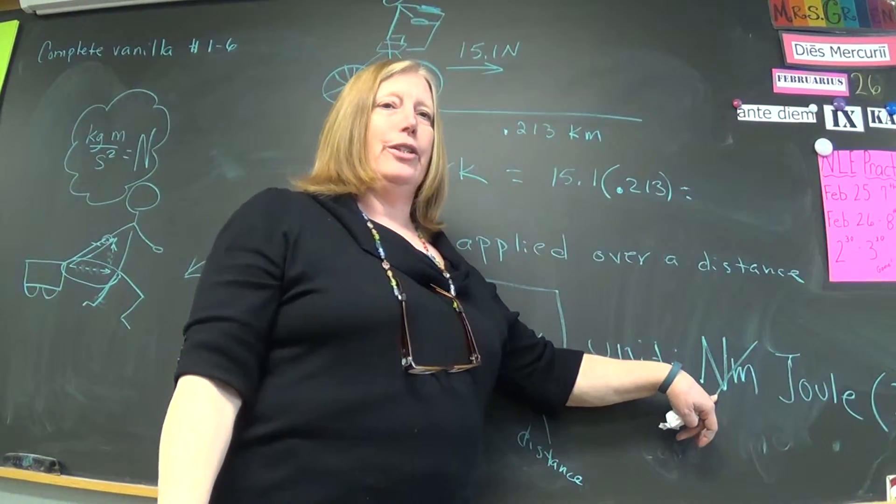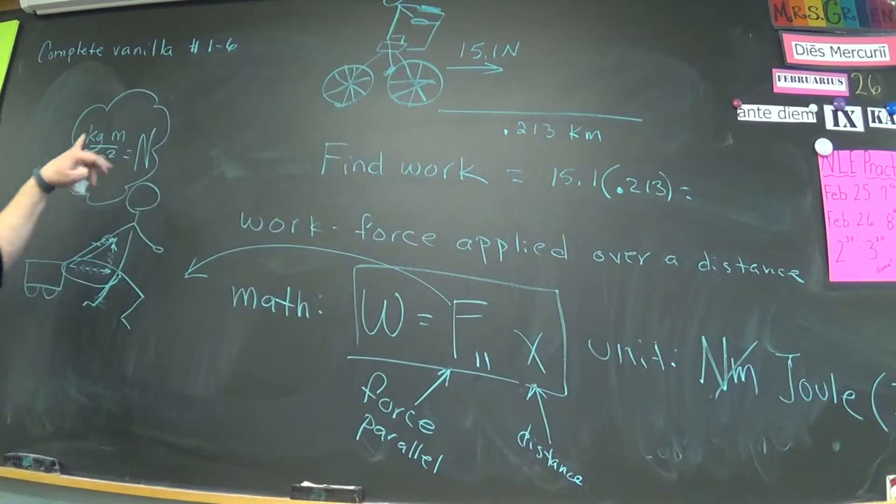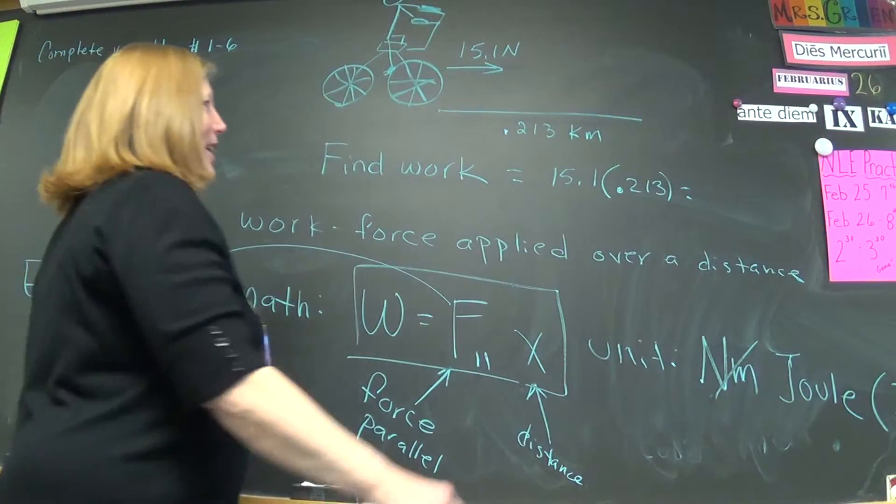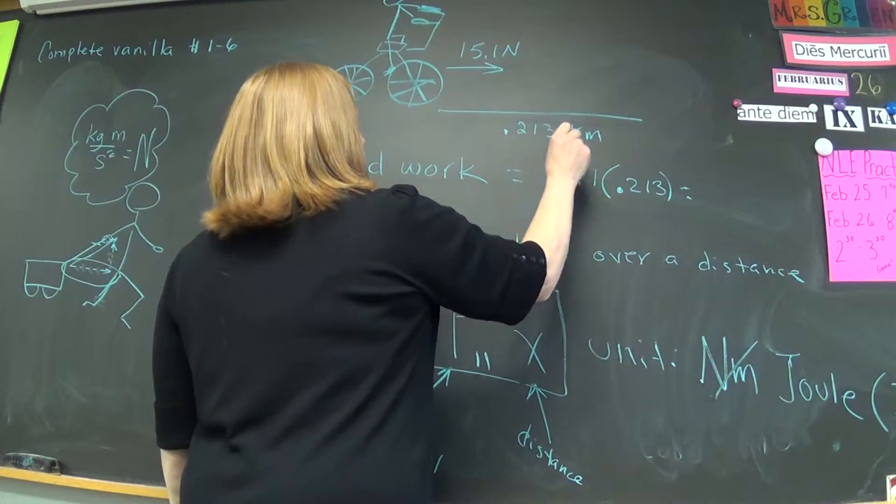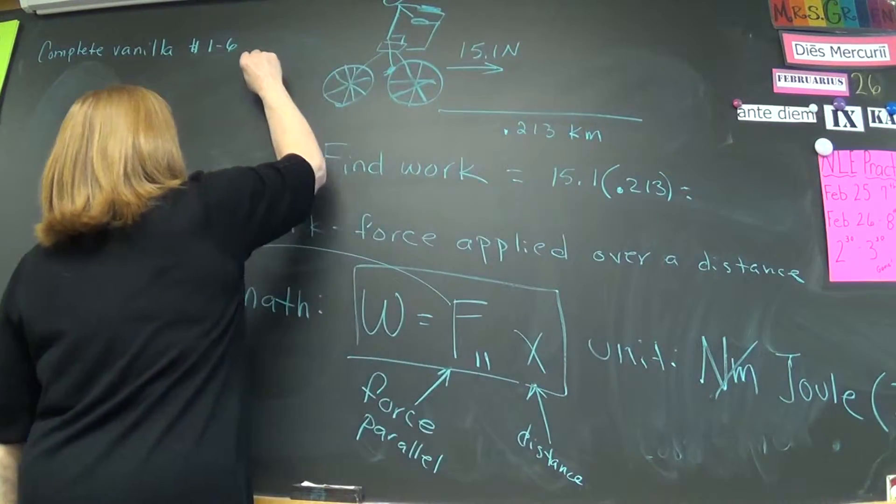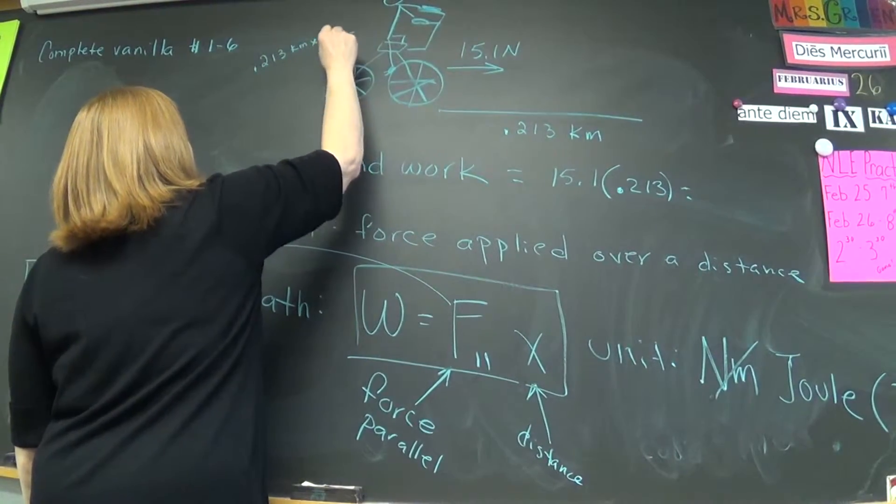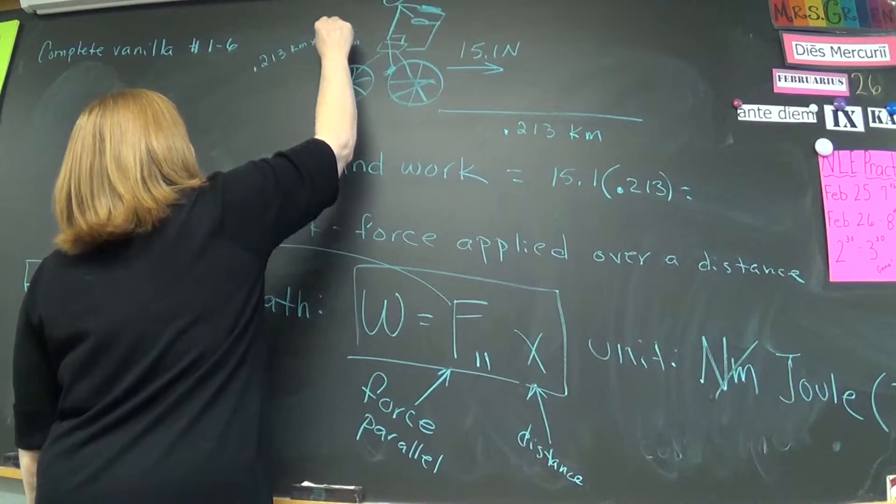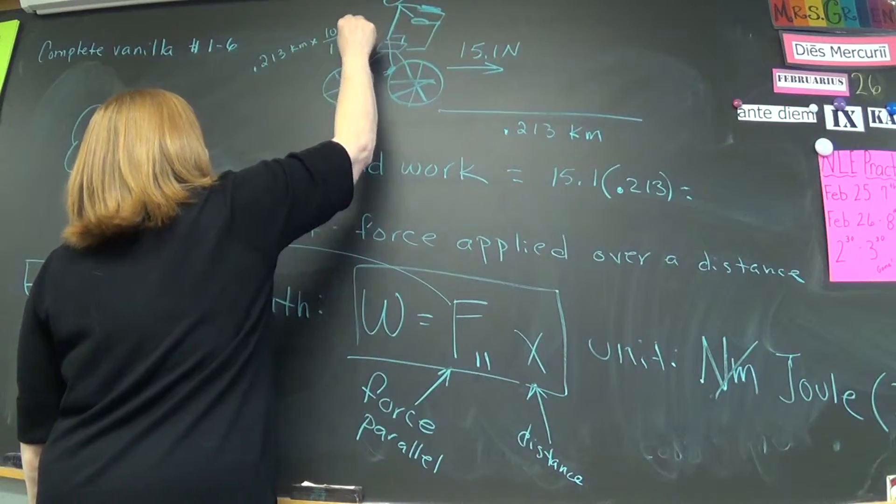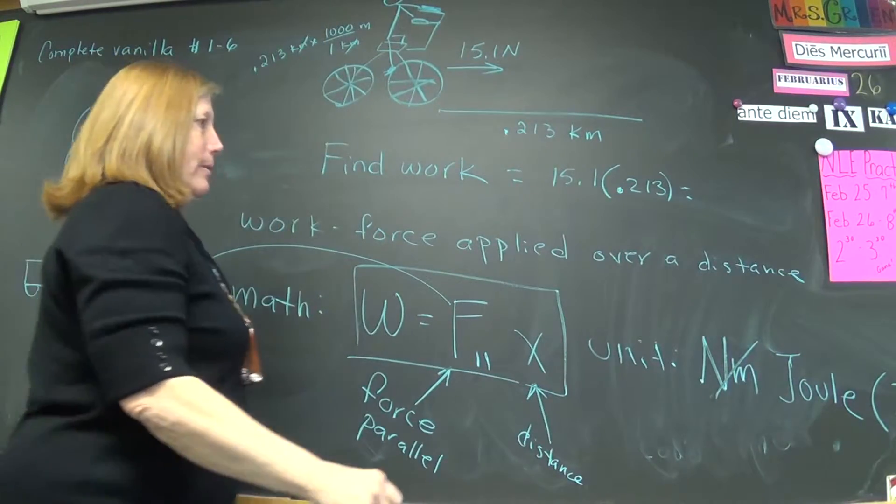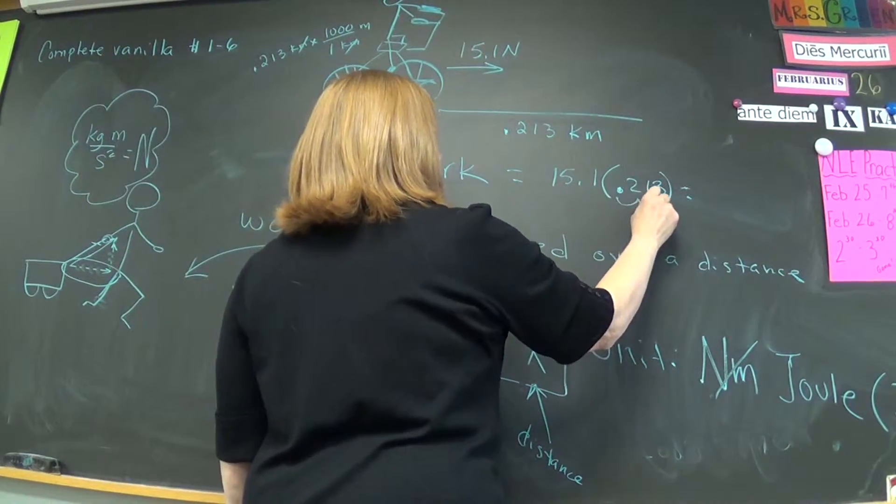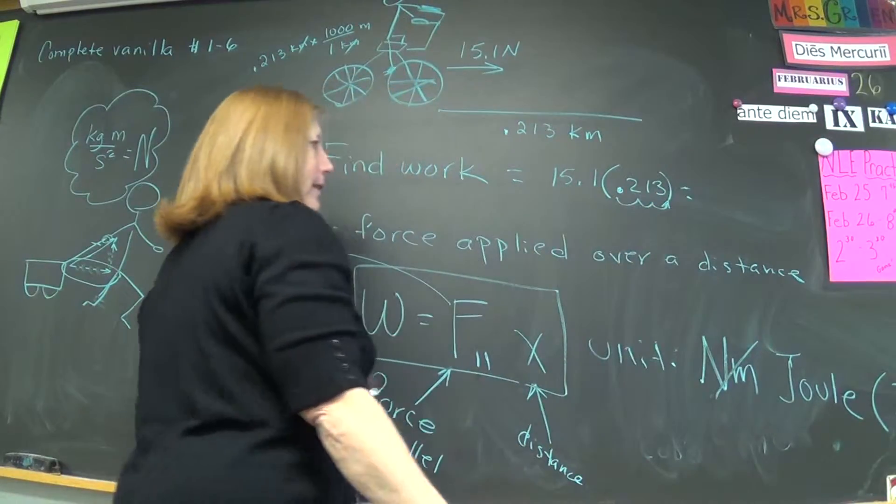Remember, we have to have newtons, and newtons is in meters. It's in meters, so how do we change this to meters? Well, we know 0.213 kilometers times one kilometer is a thousand meters. So we have to multiply by a thousand, which just means we move the decimal three times over that way.